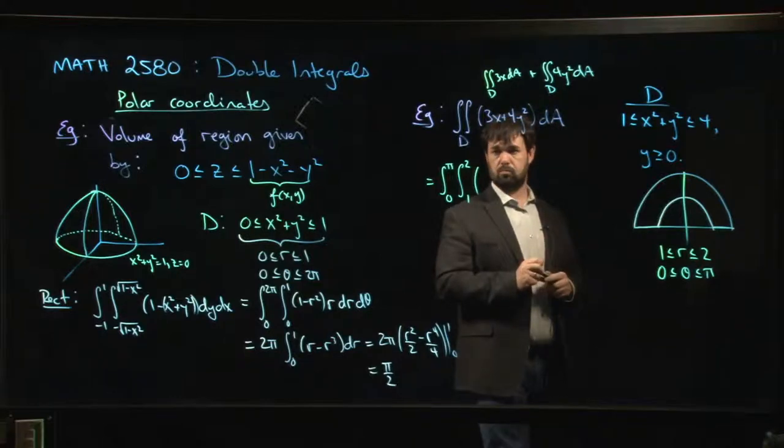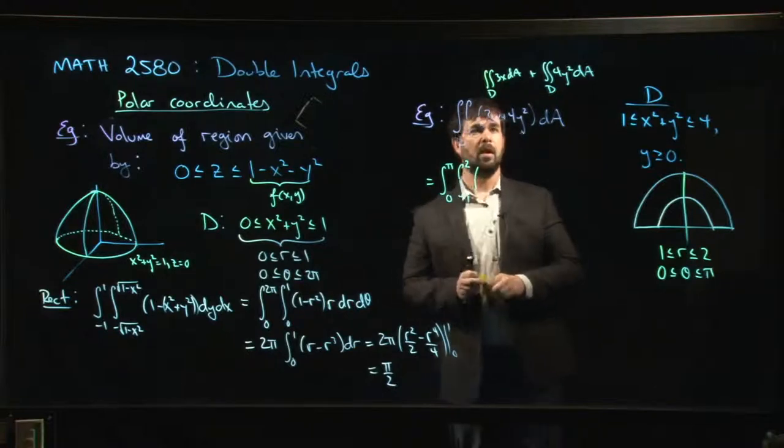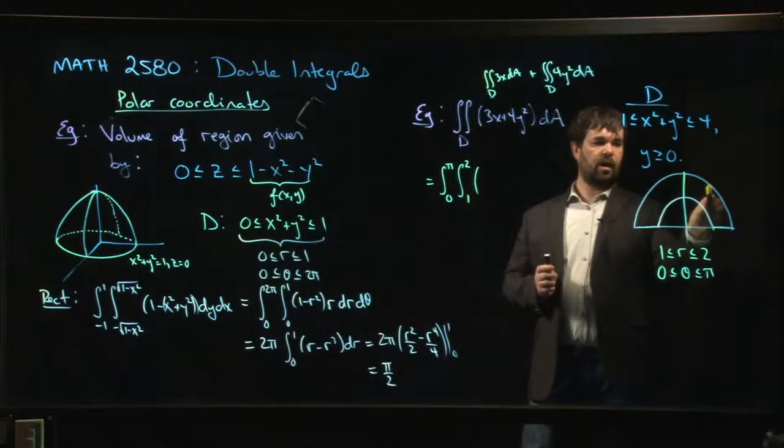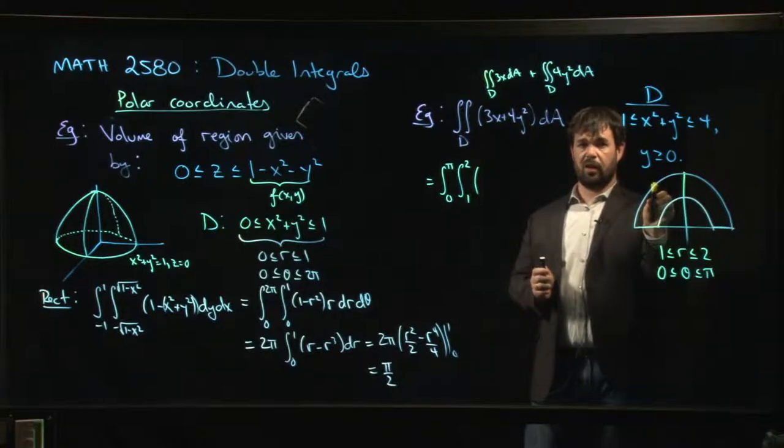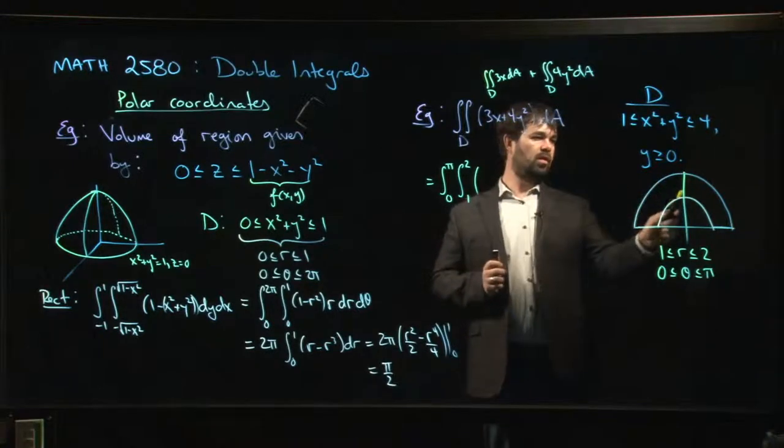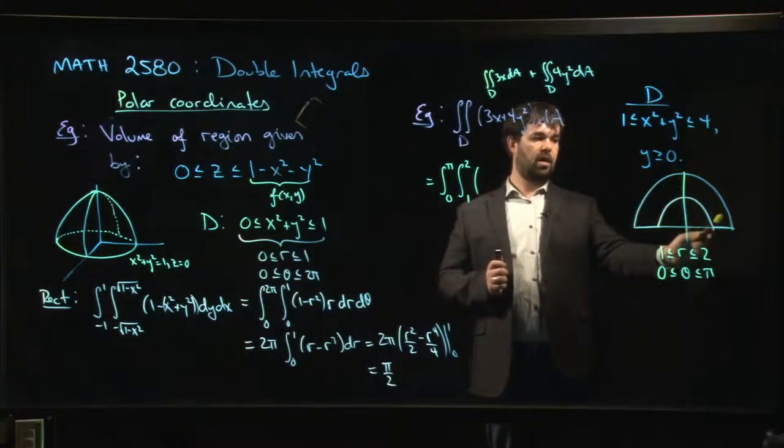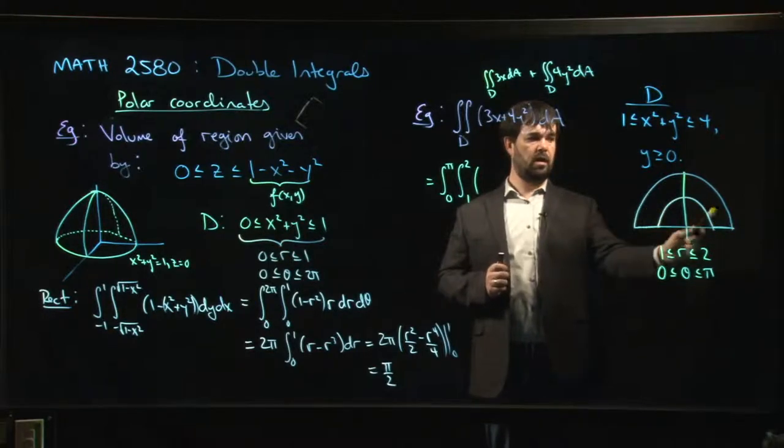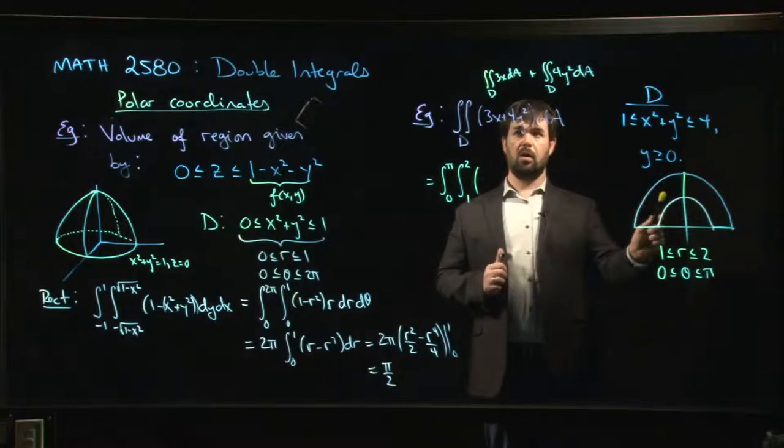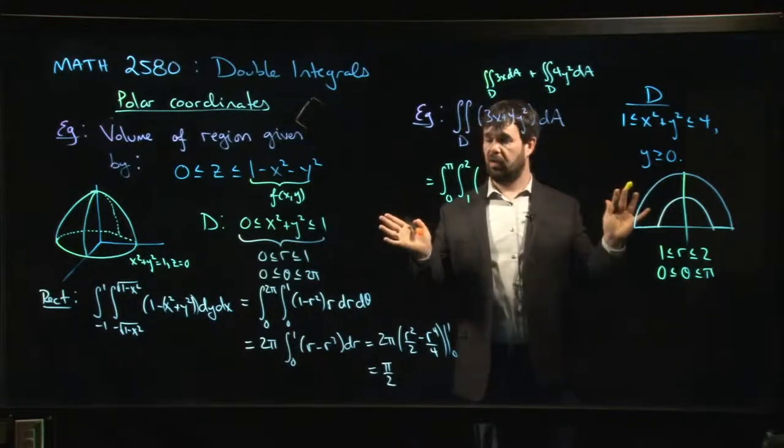If you said 0, you're right. Why is it 0? Well, this is an odd function of x. x values on this side are equal and opposite x values on that side. And we can see that our region is symmetric about the y-axis. For every x value over here, there's a corresponding minus x value over here.